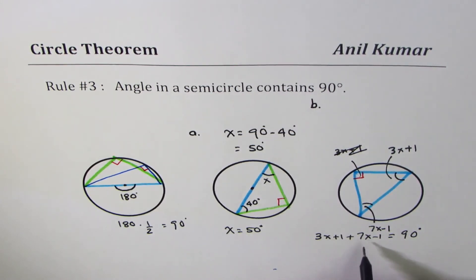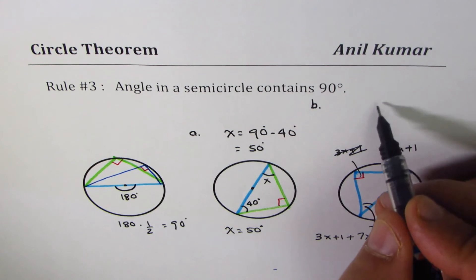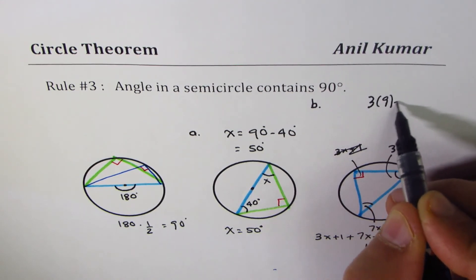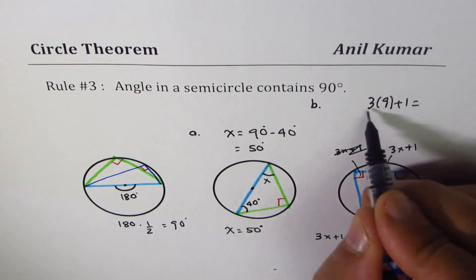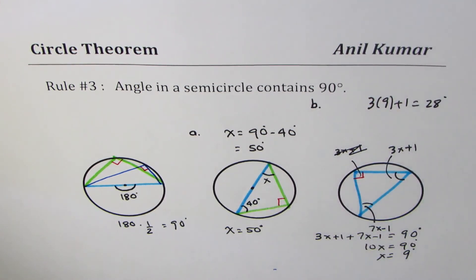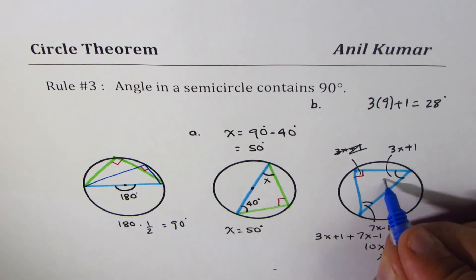3 plus 7 is 10, and 1 minus 1 is 0, so 10x equals 90 degrees or x equals 9 degrees. So if x is 9, the angle will be 3 times 9 plus 1, which is 28 degrees. This angle will be 28 degrees.